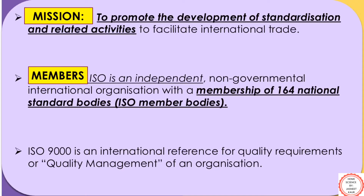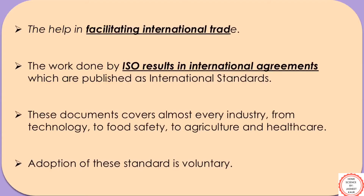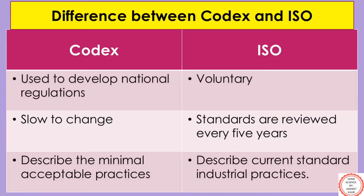ISO standards also focus on reducing cost by minimizing waste and errors and focus on increasing productivity in business. The work done by ISO results in international agreements, which are published as international standards. These documents cover almost every industry from technology to food safety to agriculture and healthcare. Adoption of these standards is voluntary. Regarding the difference between Codex and ISO: Codex is used to develop national regulations, whereas ISO is voluntary. Codex Alimentarius Commission is not very active in bringing out changes, whereas ISO standards are reviewed every five years.